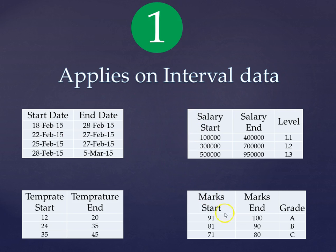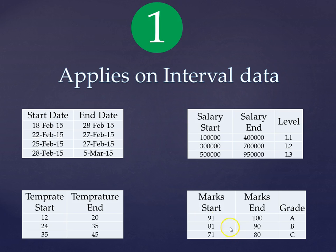The idea is that if a student table exists with a hundred different student records and their marks are given, how can we relate those marks to this interval and figure out how many students are in grade A, grade B, or grade C? Since the student data is not connected by a common key to the grade table, we cannot identify the grade A, B, C or any other relevant information according to our needs.